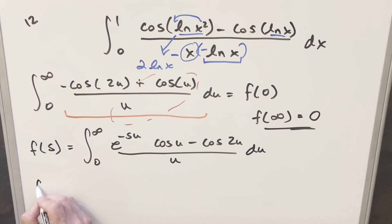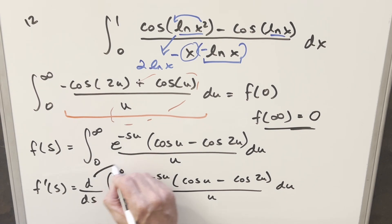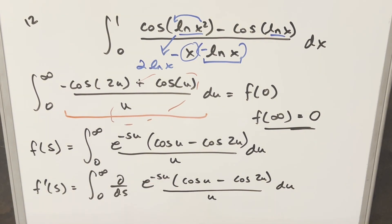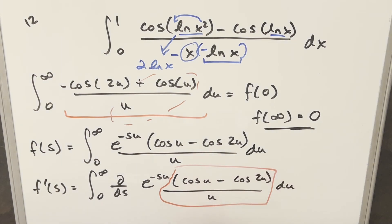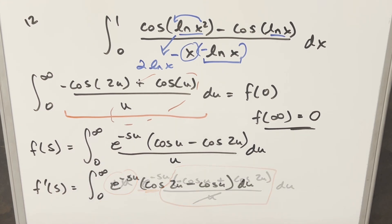We want f prime of s, so we differentiate inside the integral with respect to s. Everything other than e to the minus su is constant in s, so we just differentiate that term: we get e to the minus su times minus u from the chain rule. The minus u from the derivative cancels the u in the denominator, and we use the minus sign to flip the sign back, giving us a clean integrand.